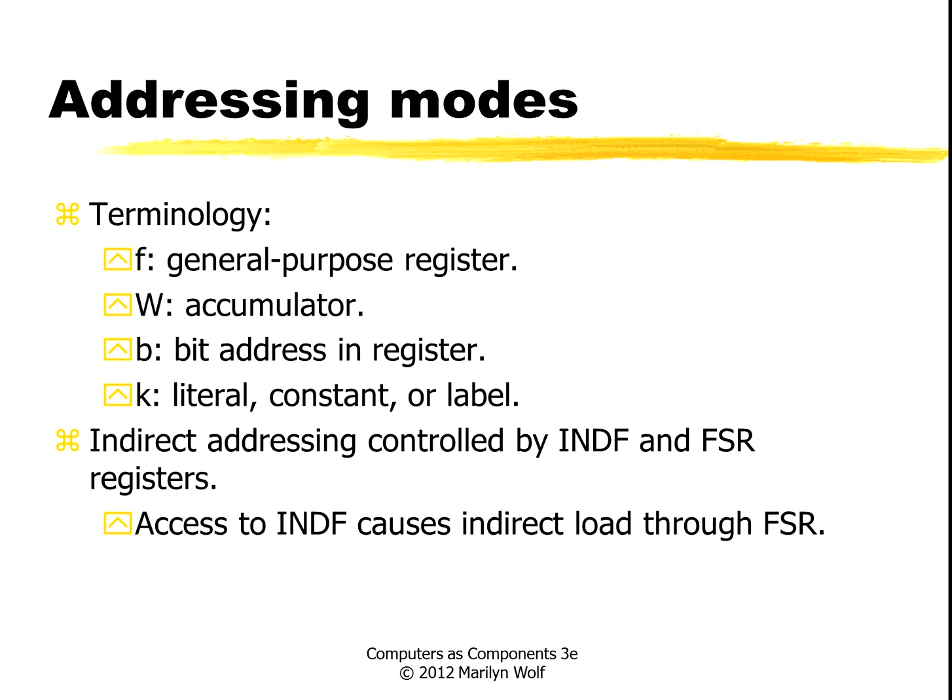The addressing modes use several abbreviations: F is a general purpose register, W is an accumulator, B is a bit address in a register, and K is a literal — a constant or a label. For indirect addressing, that's controlled by the INDF and FSR registers. An access to the INDF register causes an indirect load through the address given in the FSR register.